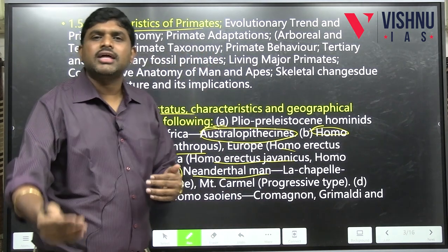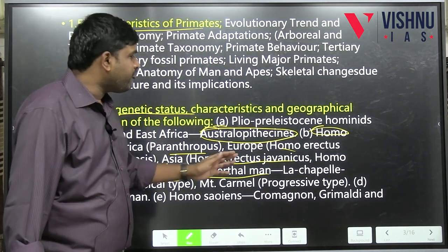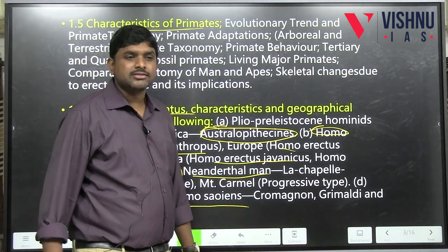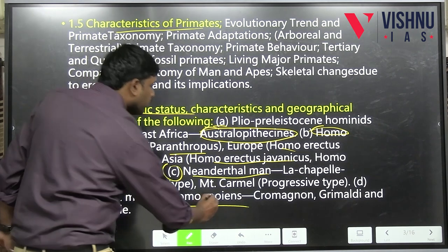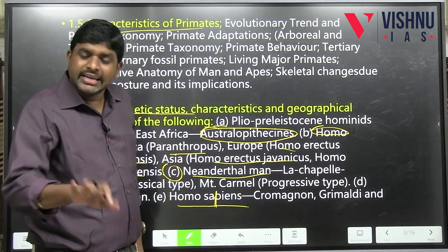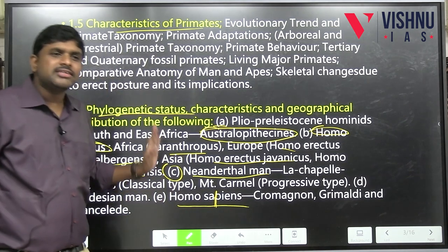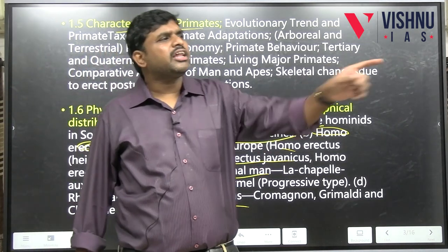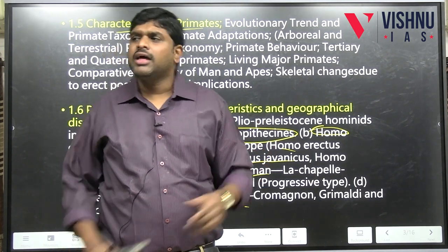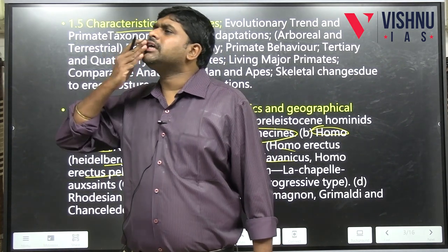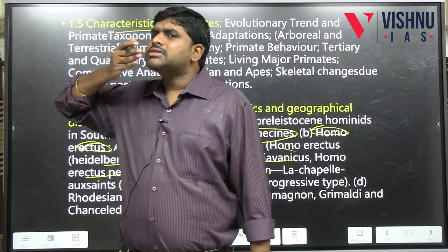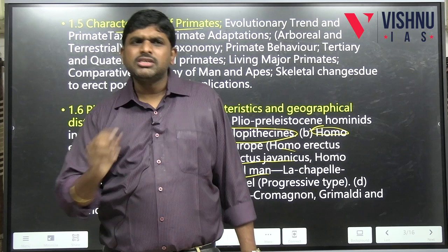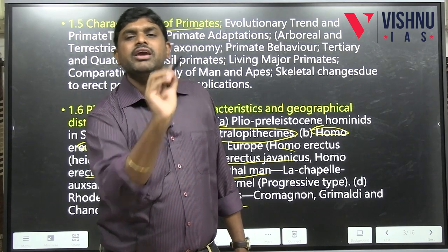After Neanderthal, from 0.2 million to 40,000 years ago, Homo sapiens came into existence, with varieties like Cro-Magnon, Grimaldi, and Chancelade. These varieties are based on physical features — height, teeth structure, etc. Then we come to dating methods in Unit 1.6.